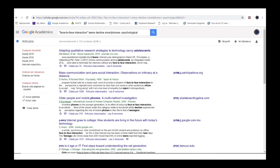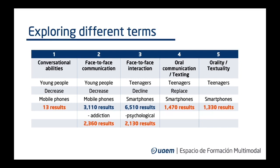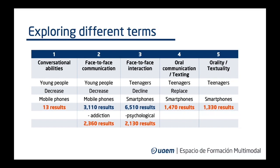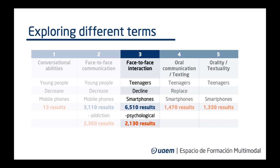Even though we have identified a mix of words that produces a good combination of relevance and quantity, we decide to do more exploration and replace 'face-to-face interaction' with two terms: 'oral communication' and 'texting.' We also use the term 'replace' instead of 'decrease' or 'decline.' We obtain a good combination of results. Finally, we explore variations using 'orality' and 'textuality' and omit the verb. The list of results is also acceptable. The best combination is number three, taking into account the number and relevance of results it delivers. I would use that combination filtering the psychological results.